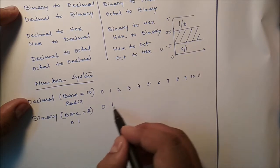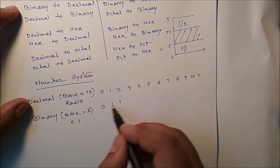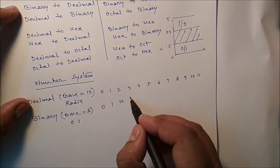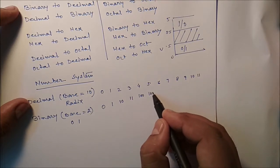Now only 2 symbols are there, 0 and 1. So for the next digit 2, we have to use the combination of these two. That is 10 is what? 2 is what? 10. Then 3 is what? 11. 4 is what? 100. 5 is what? 101 and so on.